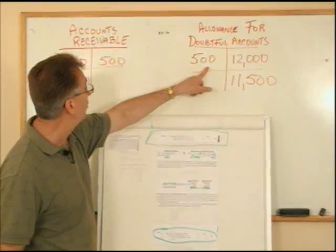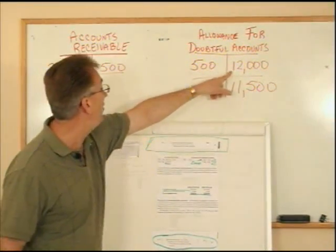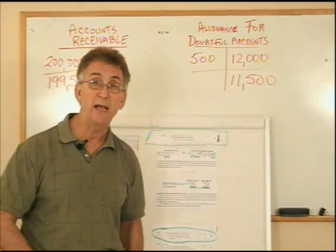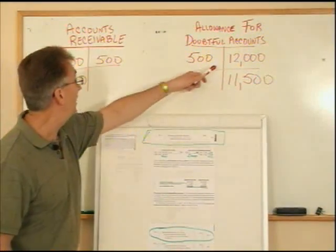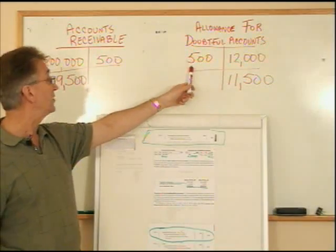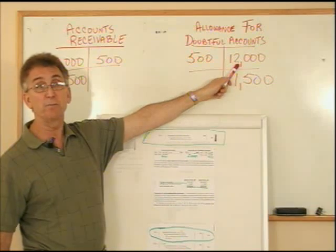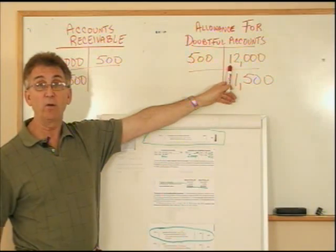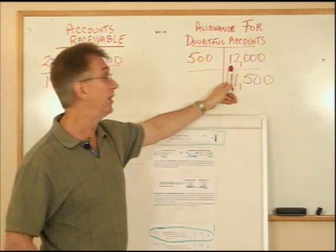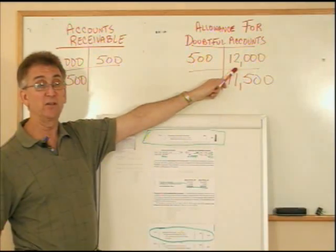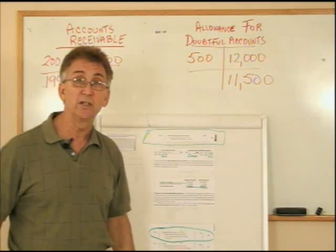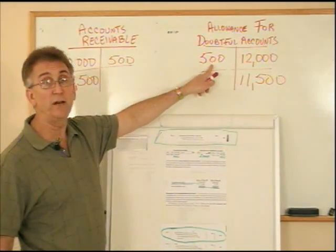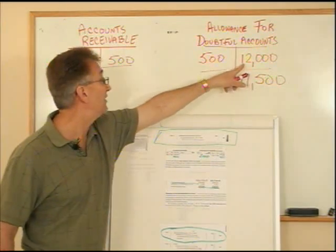This allowance for doubtful accounts is constantly going downward during the year because that's when I actually realize which accounts cannot be collected upon. You might ask: what if you write off more than $12,000? That's okay — I just end up with a debit balance, which means my allowance balance was not high enough to begin with. When I work with percentages at the end of the year to record bad debt, I'll need to make my percentage higher. And if I had a lot left over, I'd need to make my percentages lower. In either case, I always remove an account through the allowance account.